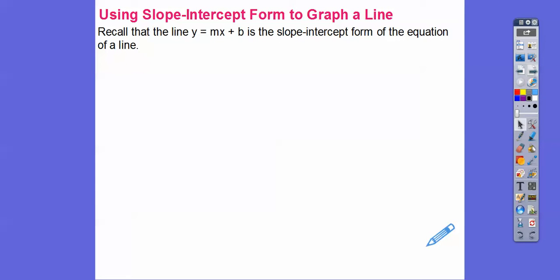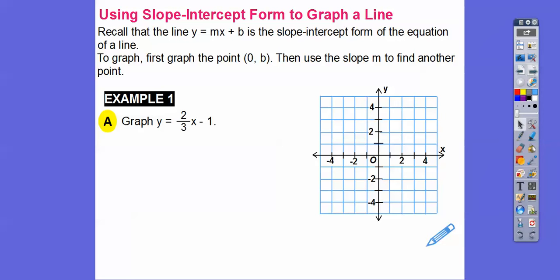Remember the line that's y equals mx plus b is called slope-intercept form of the equation. So to graph that first point, we graph the b number first. So it's (0, b), that's your y-intercept where it crosses the y-axis. And then use your slope, which is rise over run, to find another point. So here's an example.